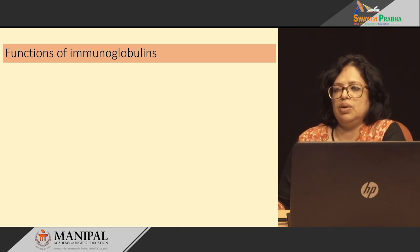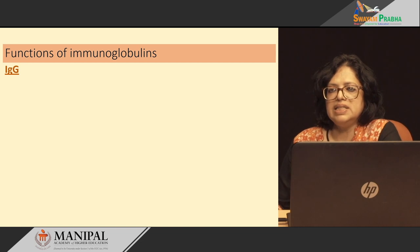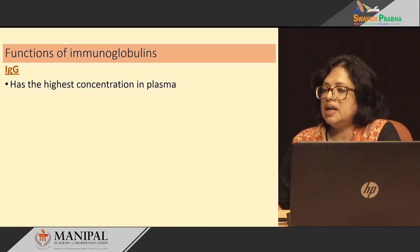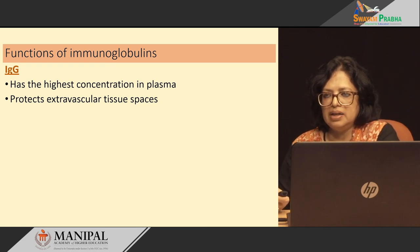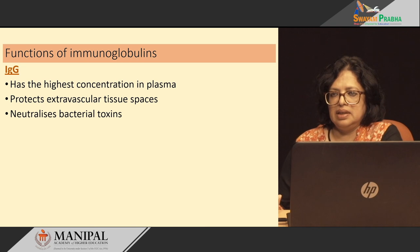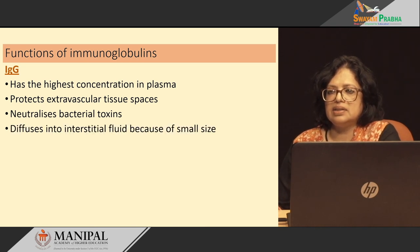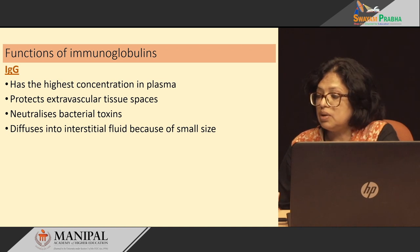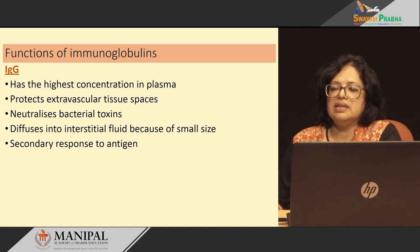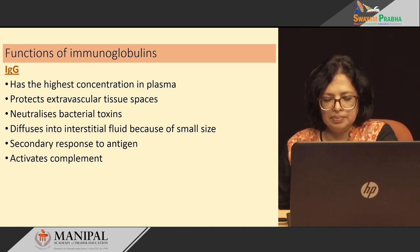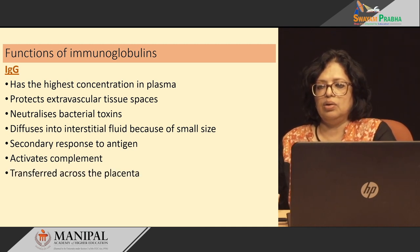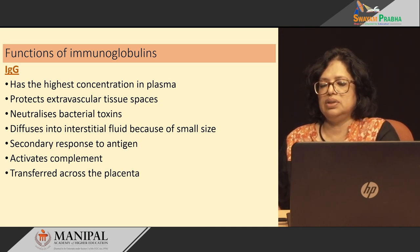What are the functions of immunoglobulins? IgG is in the highest concentration in plasma. It protects the extra-vascular tissue spaces. It can move from the blood into the interstitial space and neutralizes bacterial toxins. It diffuses into the interstitial space because of its small size. It is the secondary response to antigen, it can activate the complement system, and it is the only immunoglobulin which can be transferred across the placenta from the mother to the fetus.